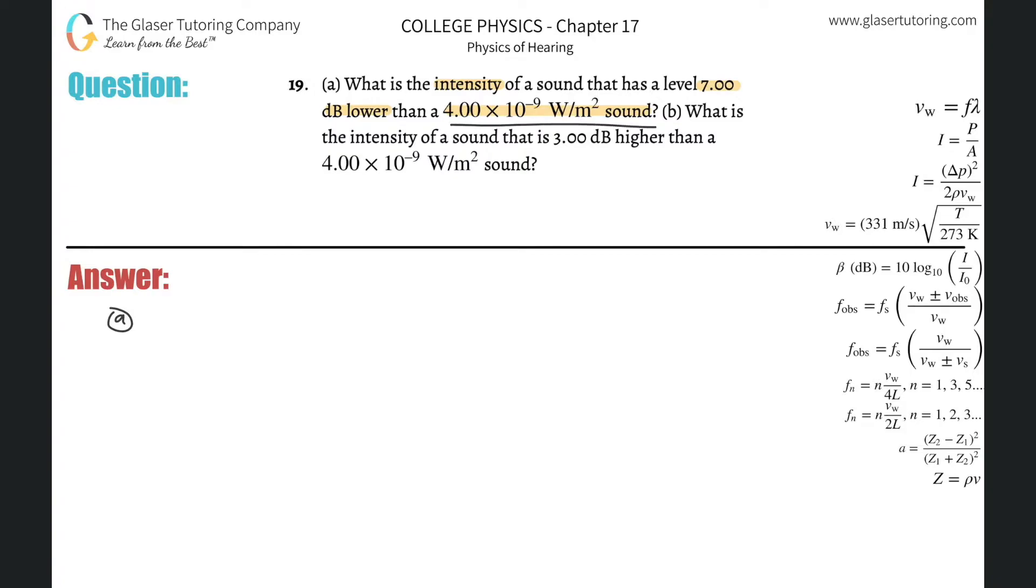So basically they gave us an intensity. We know a formula that converts intensity, which is written in watts per meter squared, the standard unit for intensity, basically power per area. And we have a formula that can then take this intensity and convert it into a decibel level. So let's do that.